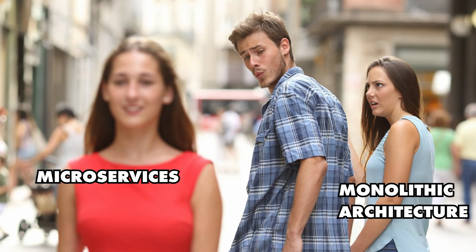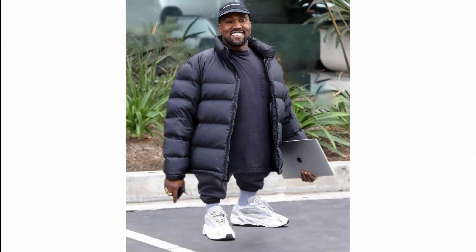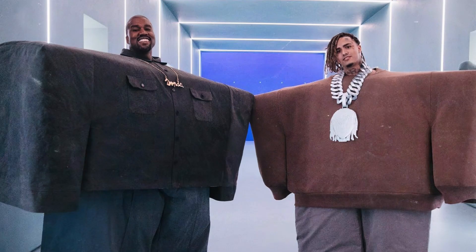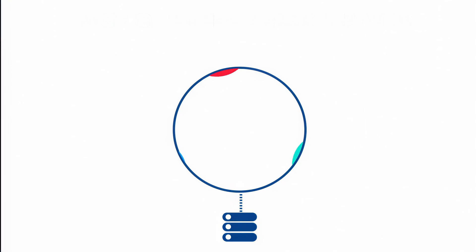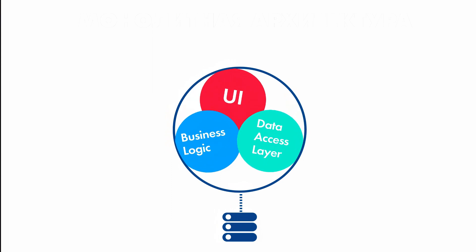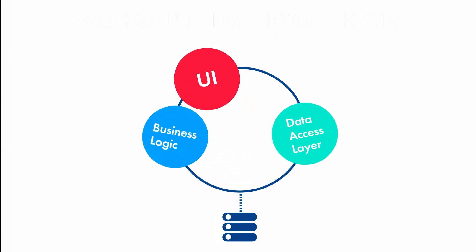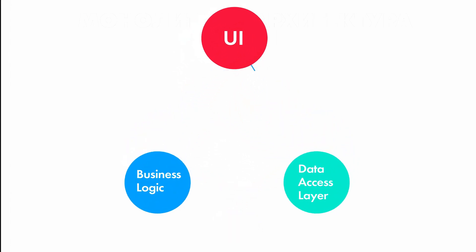Getting back to the main question: what should you opt for? A traditional monolithic architecture or trendy microservices? The answer is straightforward — choose what works best for you, not the popular and trendy one. In a monolithic architecture, all business logic is packed into a single application. Contrastingly, in microservices, the logic is divided across nearly autonomous modules that communicate data amongst themselves.